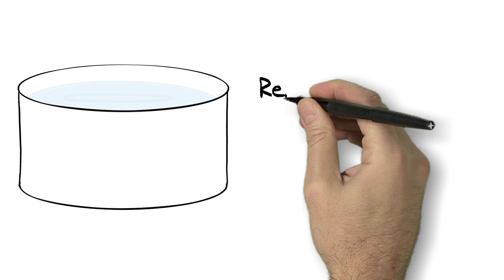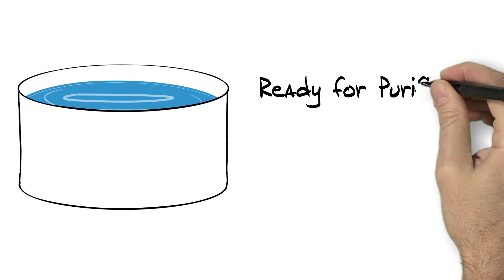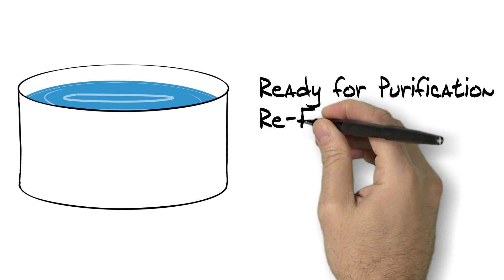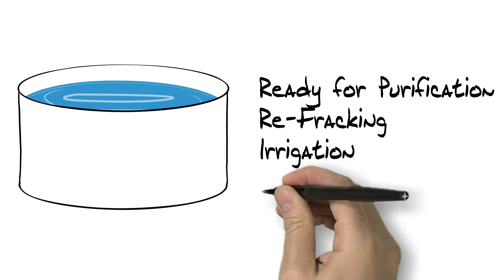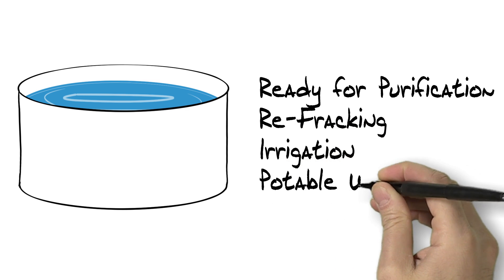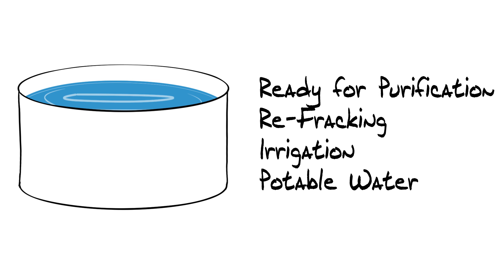Once that's done, your usual membrane or filtration process will have an easier time of making that water useful for numerous applications, such as water flooding, re-fracking, irrigation, all the way to potable water if desired.